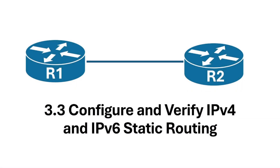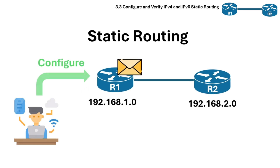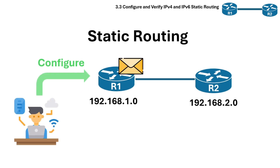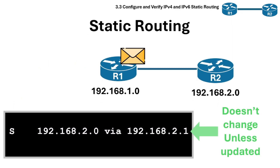Section 3.3 is configuring and verifying IPv4 and IPv6 static routing. Static routing is one of the simplest ways to tell the router exactly where to send traffic. Unlike dynamic routing protocols like OSPF and EIGRP, static routes are manually configured by a network administrator and they don't change unless you update them, making them predictable but less adaptable.